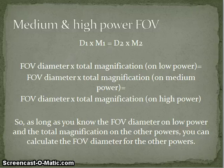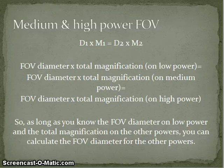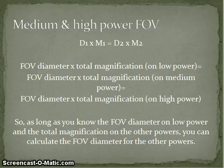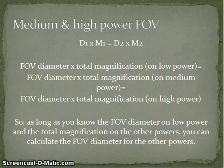Once you have your field of view diameter on low power, you can calculate it for other powers using the formula: d1 × m1 = d2 × m2. Because every time you change power your field of view decreases while magnification increases, the diameter of your field of view and total magnification are inversely proportional — as one gets bigger the other gets smaller, so their product stays the same. So if you know the field of view diameter on low power and the magnification on other powers, you can calculate the field of view for those settings.